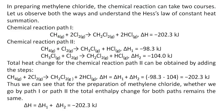In preparing methylene chloride, the chemical reaction can take two courses. Let us observe both the ways and understand Hess's Law of Constant Heat Summation. The chemical reaction via path 1 by a single step generates minus 202.3 kJ. The same reaction via a two-step path 2 generates minus 98.3 kJ in the first step and minus 104.0 kJ in the second step.